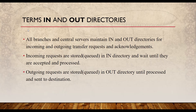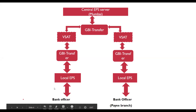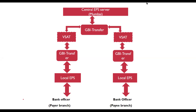To summarize the whole flow: the payer branch officer approves a transfer to the payee branch. This transaction is then transferred via network to the central server. The central EPS server transfers the instructions to the payee local EPS server. The transaction is recorded in all three servers and stored in the respective PM database. The payee branch sends an acknowledgement to EPS Mumbai, which in turn transfers the acknowledgement to the local EPS.